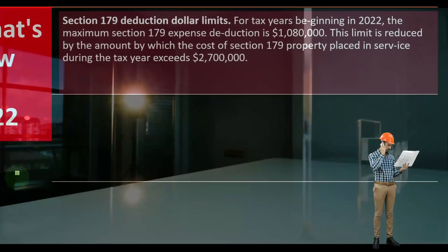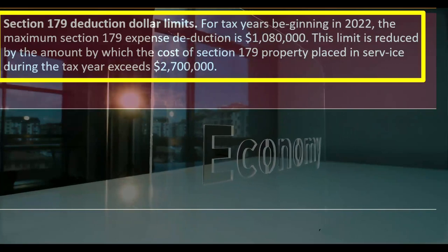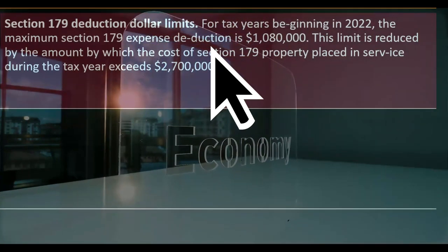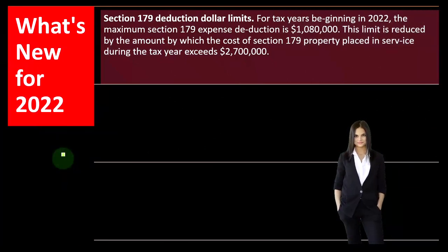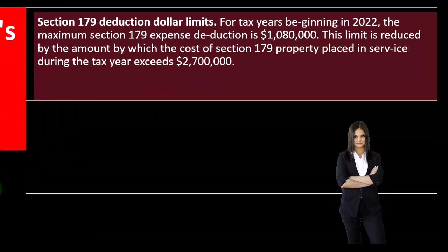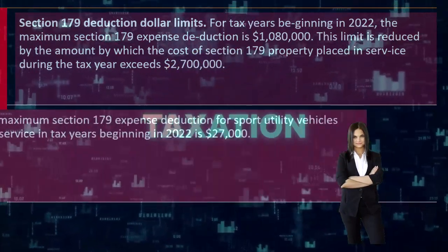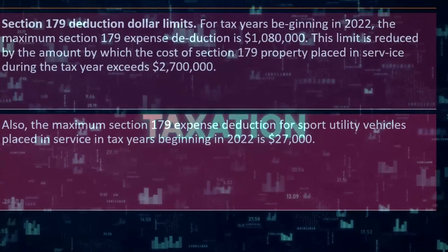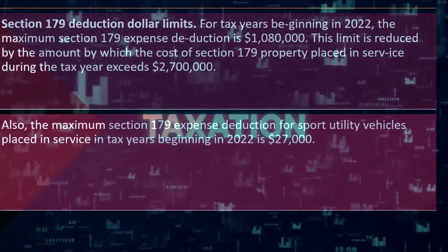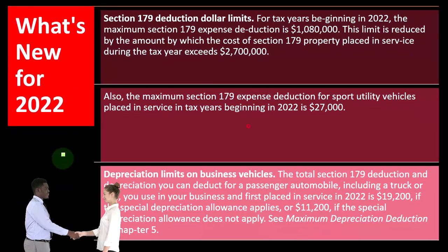Let's see what's new for 2022. Section 179 deduction dollar limit: for tax years beginning in 2022, the maximum Section 179 expense deduction is $1,080,000. This limit is reduced by the amount by which the cost of Section 179 property placed in service during the tax year exceeds $2,700,000. Also, the maximum Section 179 expense deduction for sport utility vehicles placed in service in tax years beginning in 2022 is $27,000 — a significant difference due to vehicle limitations, which we'll dive into later.